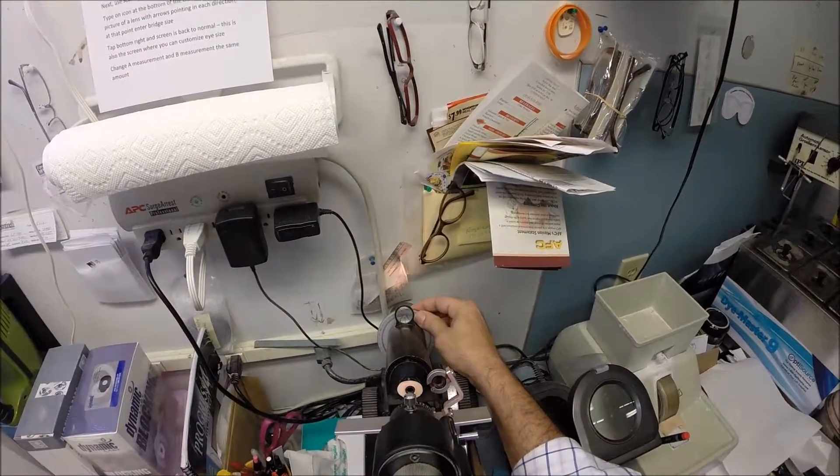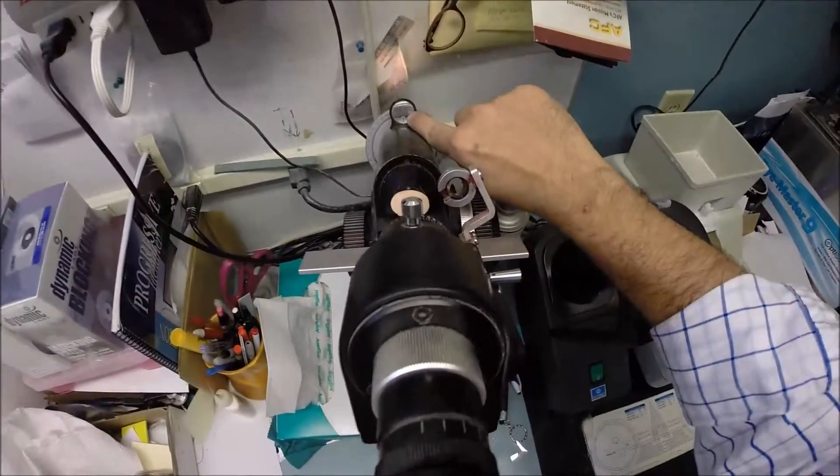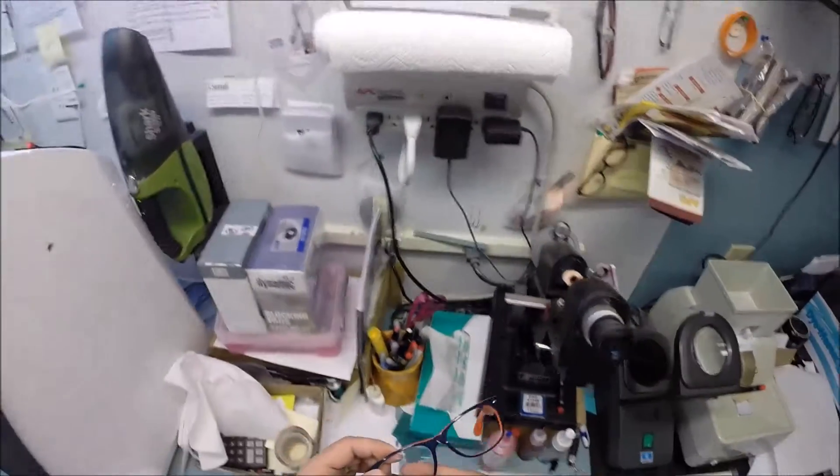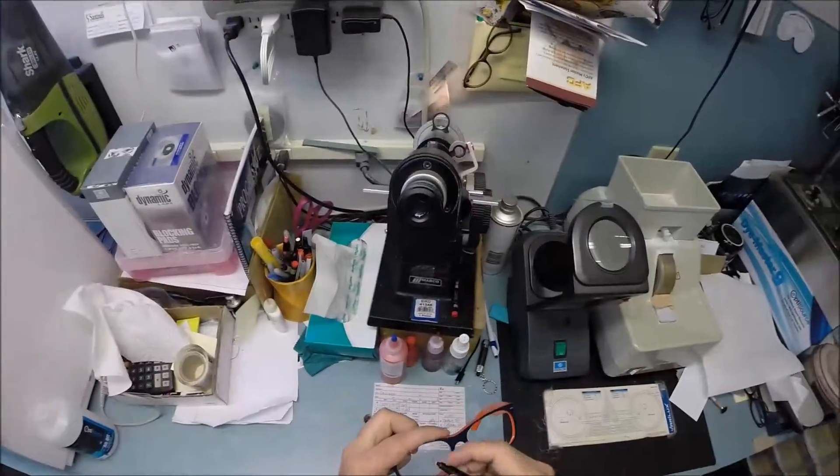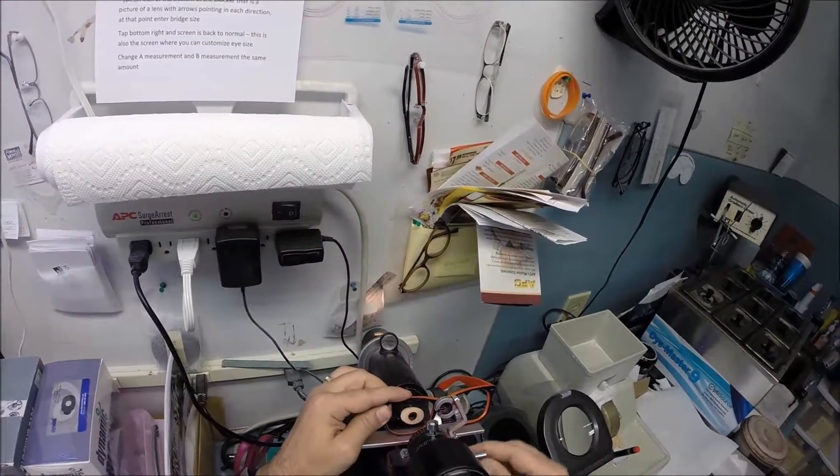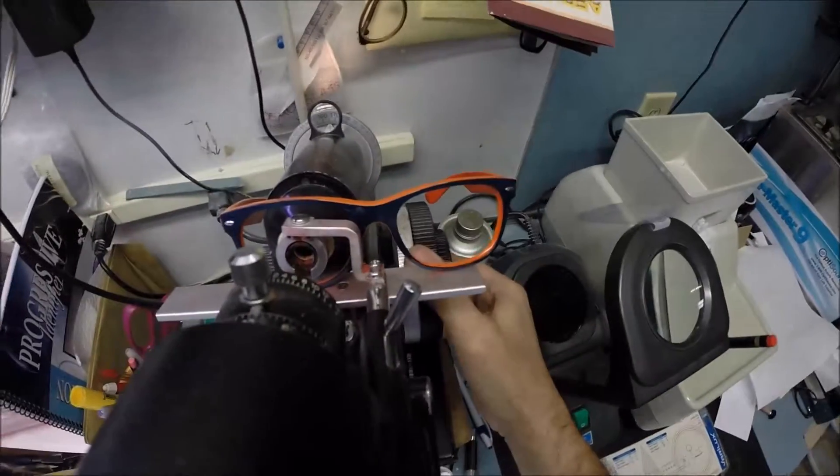While that is cutting, I want to inspect the right lens. I'm going to spin the axis wheel back to 165, exactly halfway between 160 and 170. I'm going to put the lens in right above that red dot. Let me darken that red dot for you.